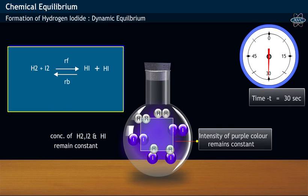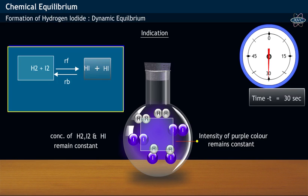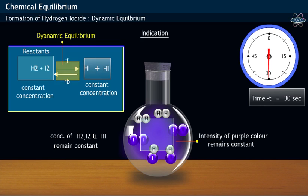This indicates that having a constant value of both reactants and products in reaction mixture indicates that there exists a dynamic equilibrium between reactants Hydrogen and Iodine and products Hydrogen Iodide.